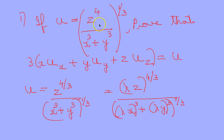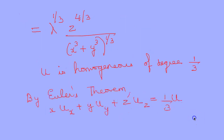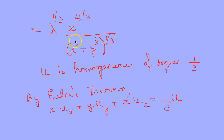We first replace x by λx, y by λy, z by λz. So we get λz raised to 4/3 divided by (λx)³ + (λy)³ raised to 1/3. Simplifying, this becomes λ^(1/3) · z^(4/3) / (x³ + y³)^(1/3), which is nothing but u.